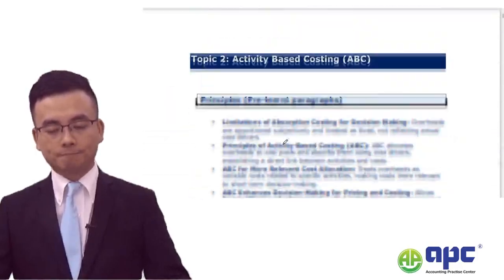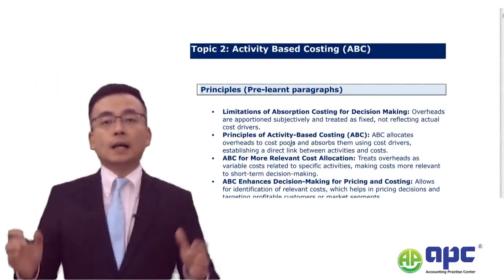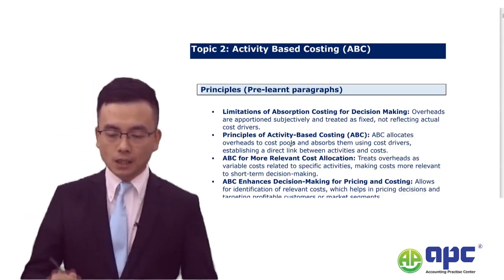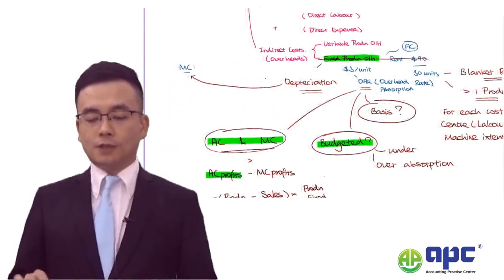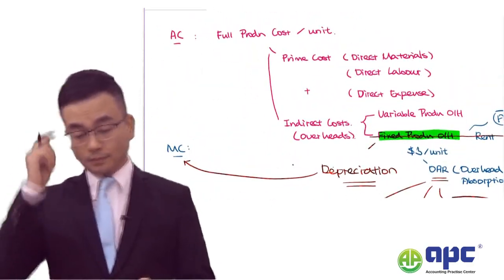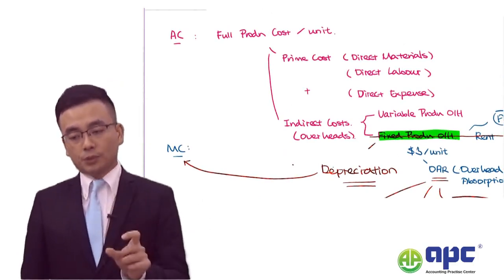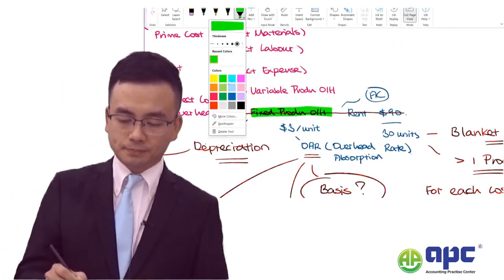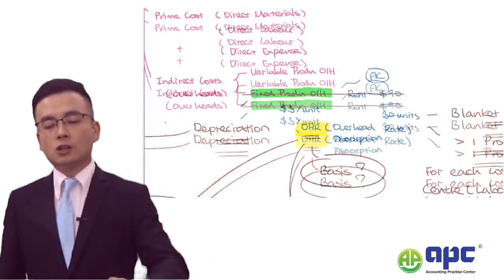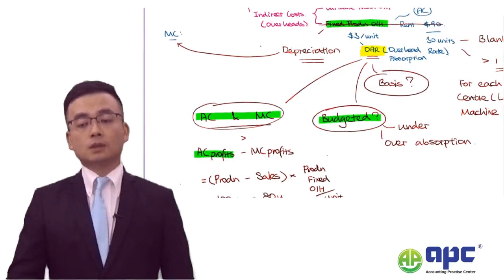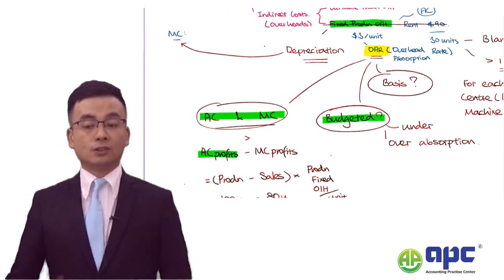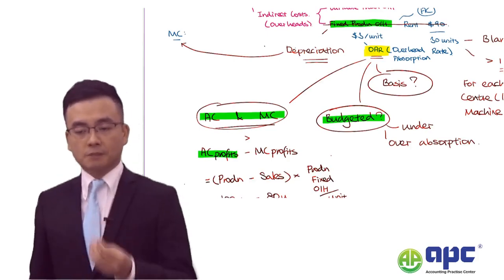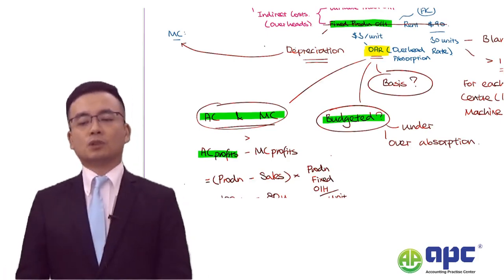Let's move on to topic two: ABC, or activity-based costing. The problem with absorption costing is that we need to calculate the OAR — the overhead absorption rate — and there are three particular complications: the basis of setting up the OAR, the budgeted figure differing from actual, and the differences between absorption and marginal costing.